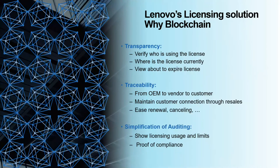Why blockchain? Blockchain provides several key capabilities for us. We need transparency to generate reports and prove transactions are there to support auditing and compliance. We needed traceability — understanding the life cycle of a license from its creation through transfers across various resellers, and through companies subleasing sections of the license. For example, a company may buy 100 licenses and sell 10 to one smaller company and 20 to another. Blockchain satisfies all these requirements and provides a transaction-based mechanism that is secure and encrypted.